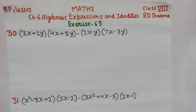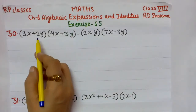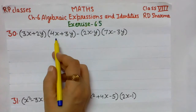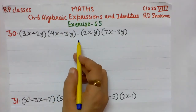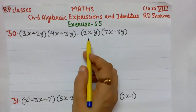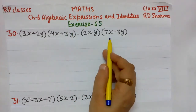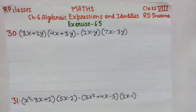Welcome students in RP classes. We continue with Class 8th Maths R.D. Sharma, Chapter 6, Algebraic Expressions and Identities, Exercise 6.5. Question 30: (3x + 2y)(4x + 3y) − (2x − y)(7x − 3y).